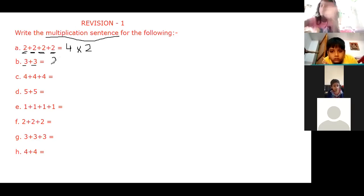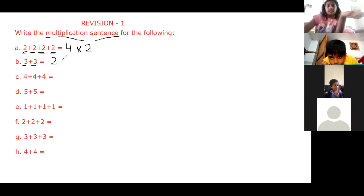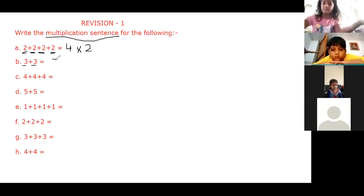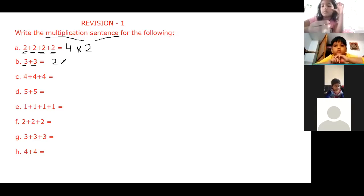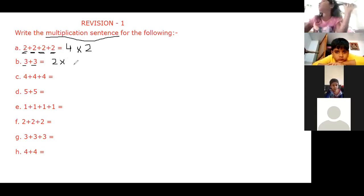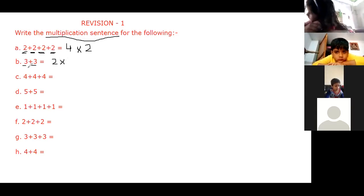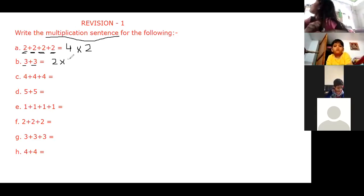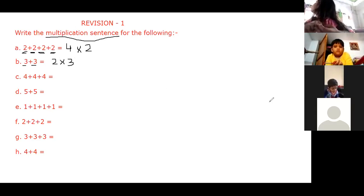After this two, what we will write, Bhavashred? Multiply three. We will put the multiplication symbol. Which number is being repeated here? Three. Yes. So we are writing number three again and again. We will write this three after the multiplication symbol. Very good, Bhavashred.